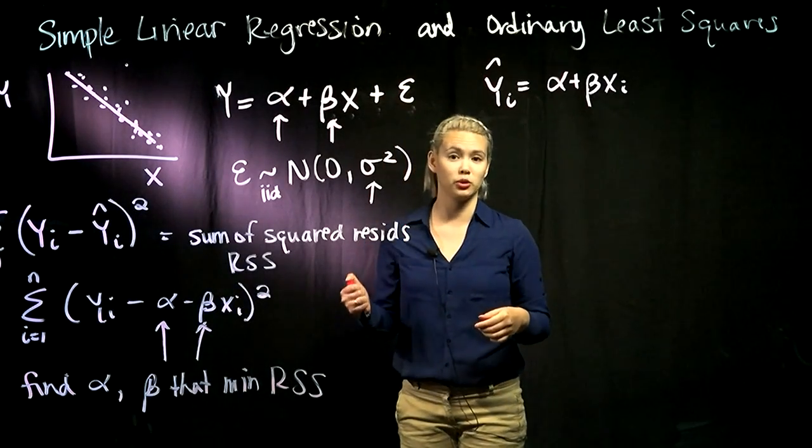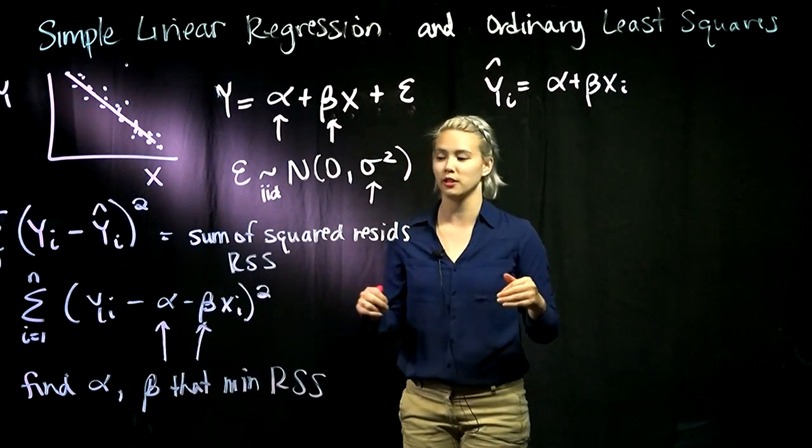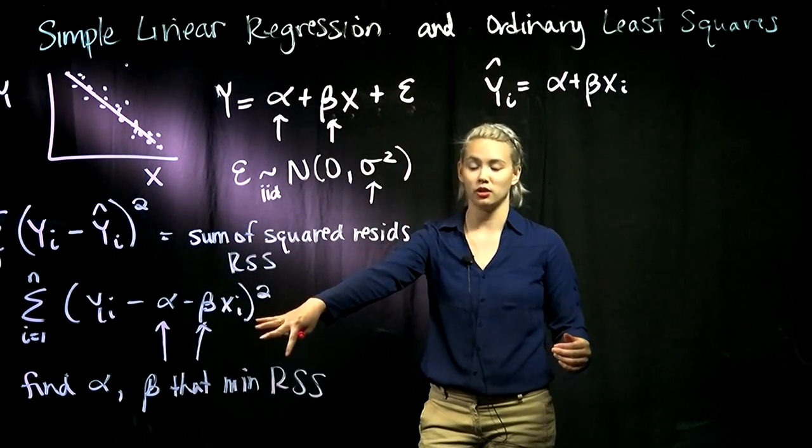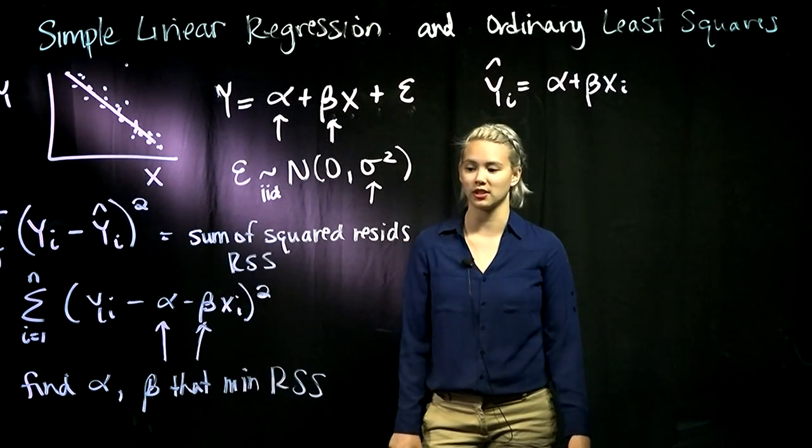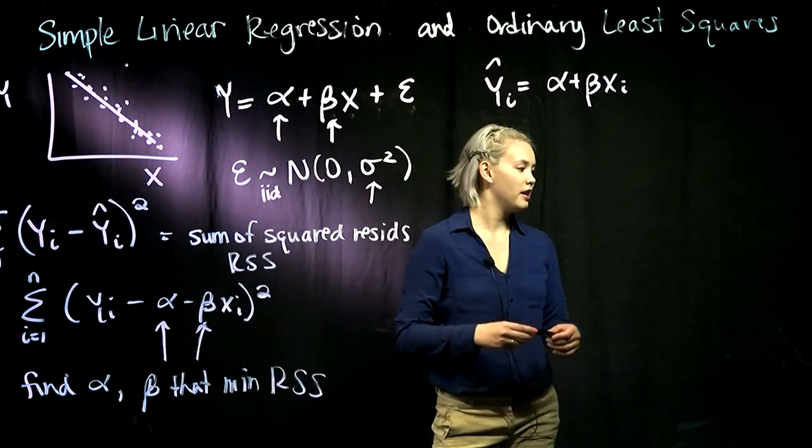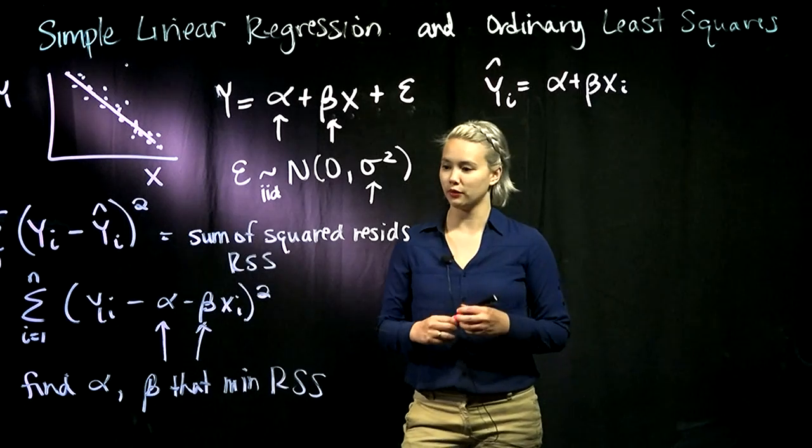That's what our software is doing—JMP, Minitab, whatever we're using. That's what our software is usually doing when we do this simple linear regression stuff. It's just finding the alpha and beta that minimizes our residual sum of squares.